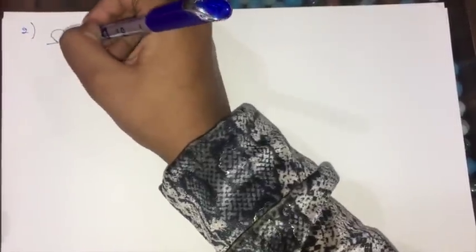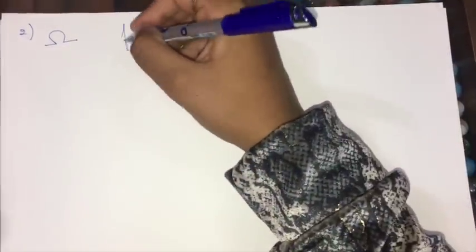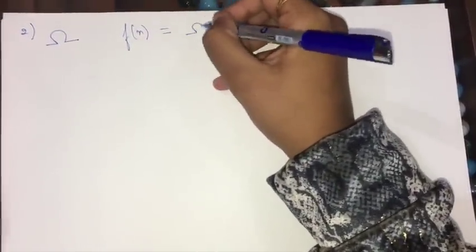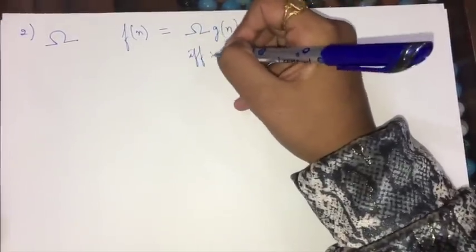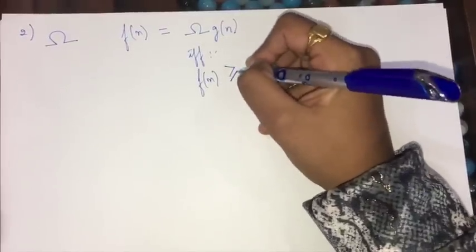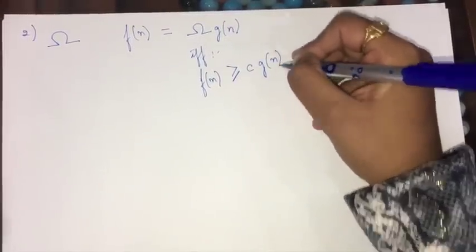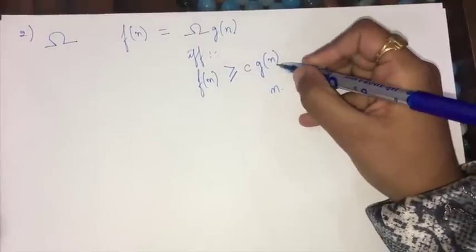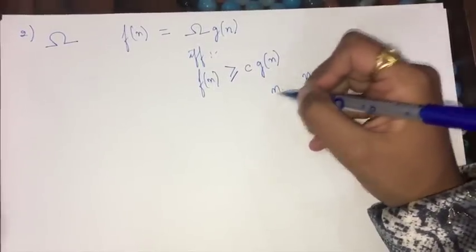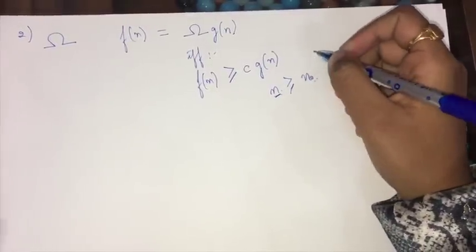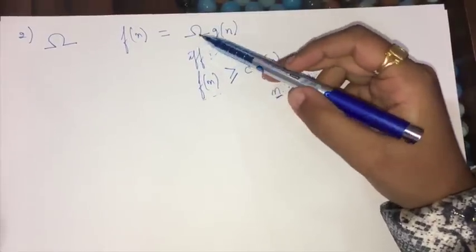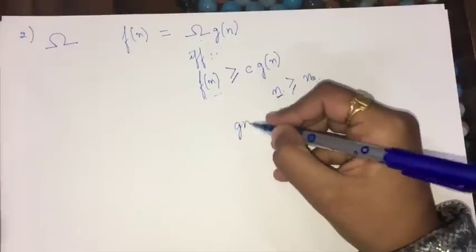Now the Omega notation. We say that a function f(n) is equal to Omega of g(n) if and only if f(n) is greater than or equal to some constant c times g(n). The same condition holds: there is an n₀ such that n ≥ n₀.